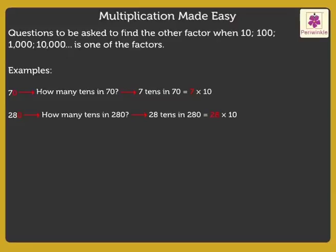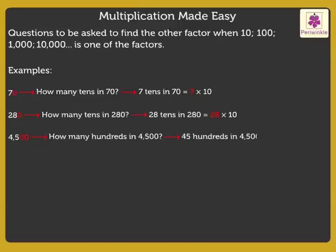Find the other factor for the number four-thousand-five-hundred. There are two zeros in four-thousand-five-hundred. Therefore, one-hundred is one of the factors. How many hundreds in four-thousand-five-hundred? There are forty-five hundreds in four-thousand-five-hundred, which is equal to forty-five into one-hundred. Hence, we get the other factor as forty-five.